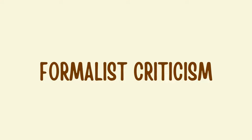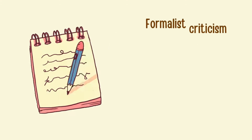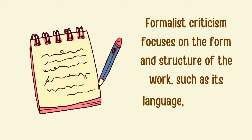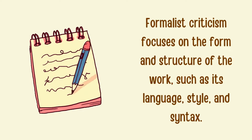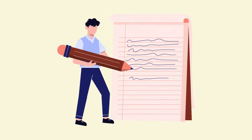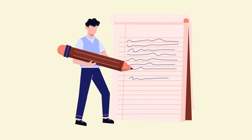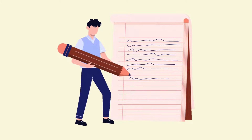Formalist criticism focuses on the form and structure of the work, such as its language, style, and syntax. This approach seeks to understand how the form and structure of the work contribute to its meaning and effect.